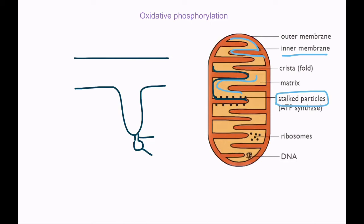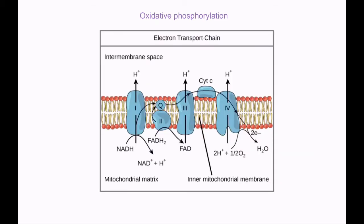Like every other membrane, the inner membrane of mitochondria contains proteins. Special groups of proteins in this membrane form something called the electron transport chain. For our syllabus we don't need to know the name of each protein — we just need to understand what happens.